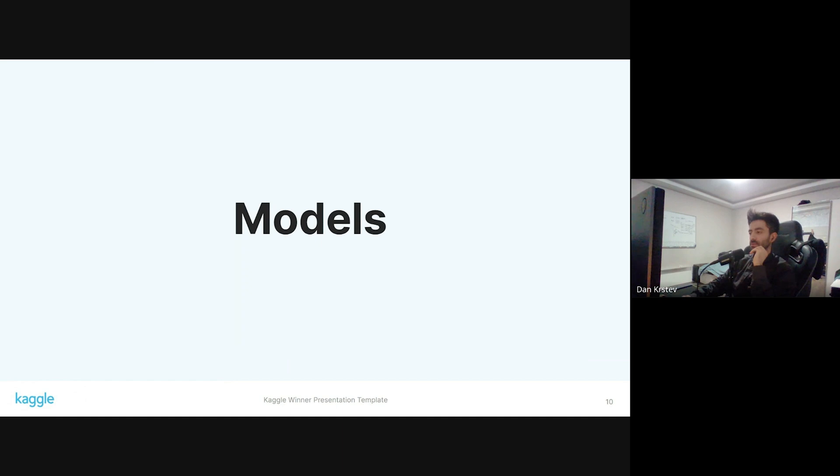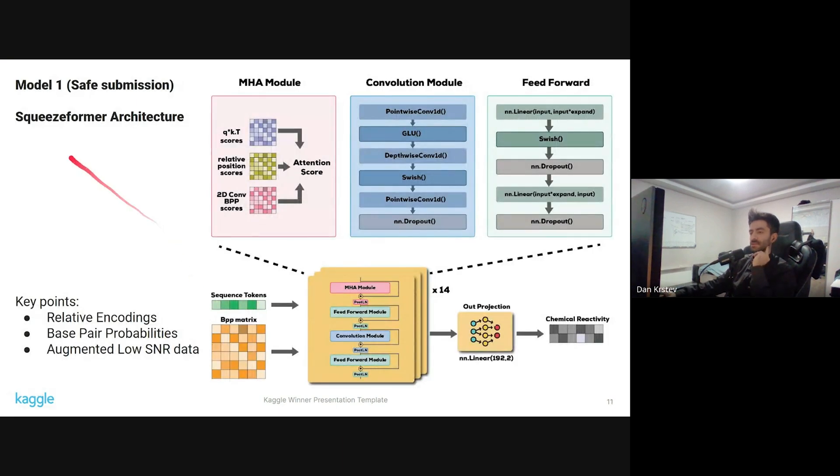I would like to talk more about the models. So first is the Squeezeformer architecture. As was discussed in the previous solution, the Squeezeformer architecture consists of three modules: the multi-head self-attention module, convolution module, and feed-forward module. They are arranged in this fashion: multi-head, layer norm, feed-forward, layer norm, convolution, layer norm, and then feed-forward again. This consists of one Squeezeformer block. This is repeated 14 times in my solution, and then just a simple out projection so we can have predictions for the two different experiment types.